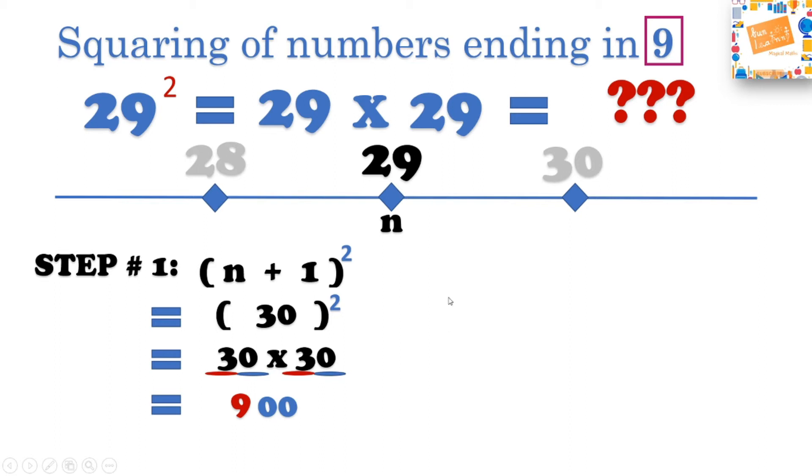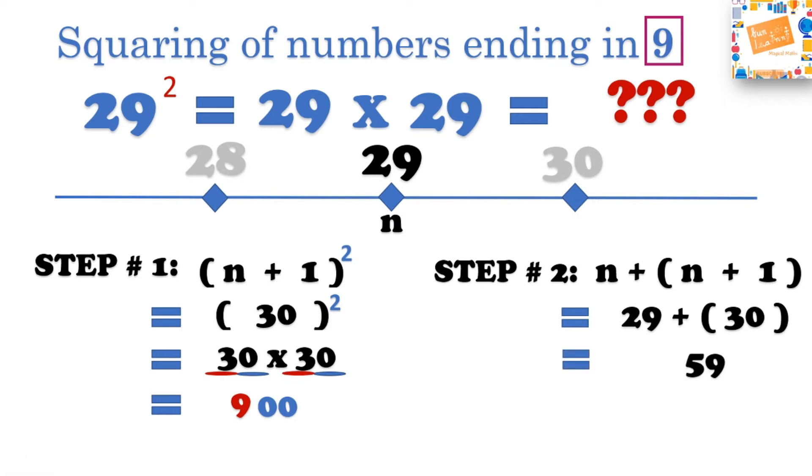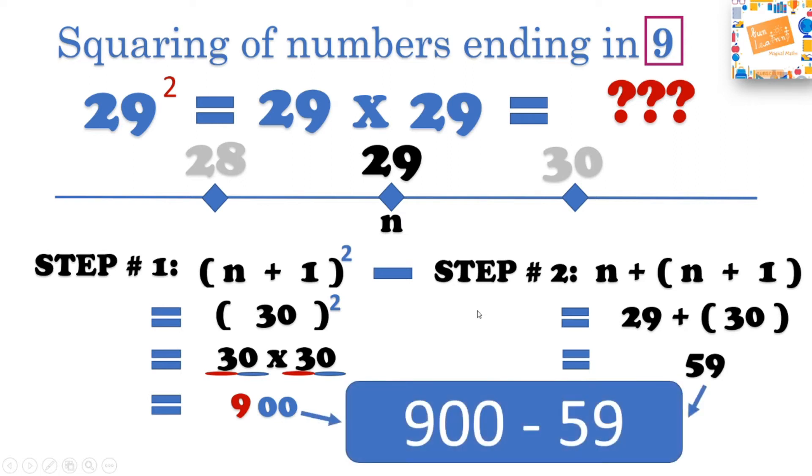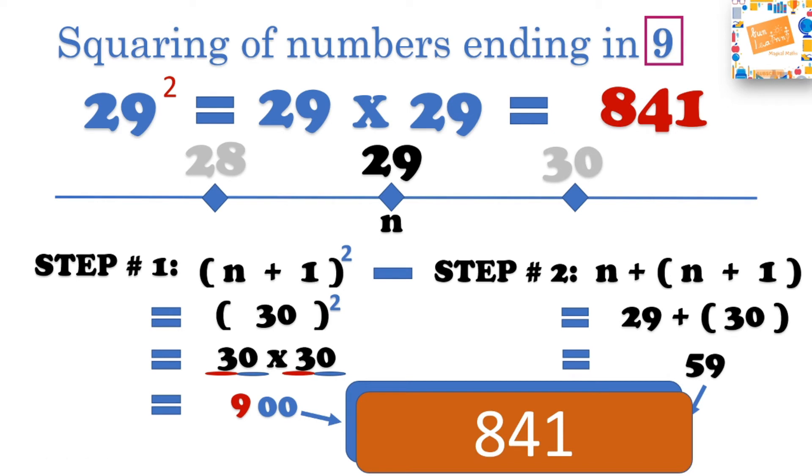Now let's look at the second step. Here you need to add 29 and the number after 29, that is 30, together, which is n plus n plus 1, which is equal to 29 plus 30, which is equal to 59. Now you need to subtract the step 2 answer from step 1 answer, that is equal to 900 minus 59, which will give us 841, which is the answer to 29 square. Isn't it easy? Look it up in the calculator and you will see that this is the right answer.